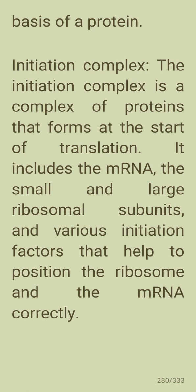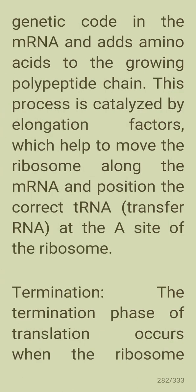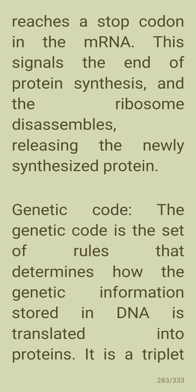The initiation complex includes the mRNA, small and large ribosomal subunits, and various initiation factors including EIF-2, EIF-3, and EIF-4 that help position the ribosome correctly. During elongation, the ribosome reads the mRNA genetic code and adds amino acids to the growing polypeptide chain, facilitated by elongation factors that move the ribosome and position the correct tRNA to the A site. Termination occurs when the ribosome reaches a stop codon, signaling the end of protein synthesis and causing the ribosome to disassemble and release the newly synthesized protein.